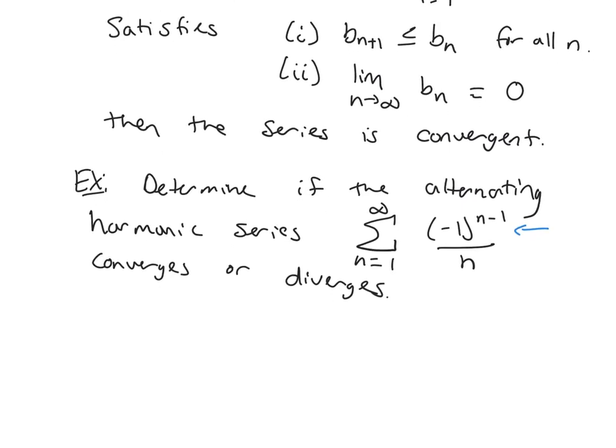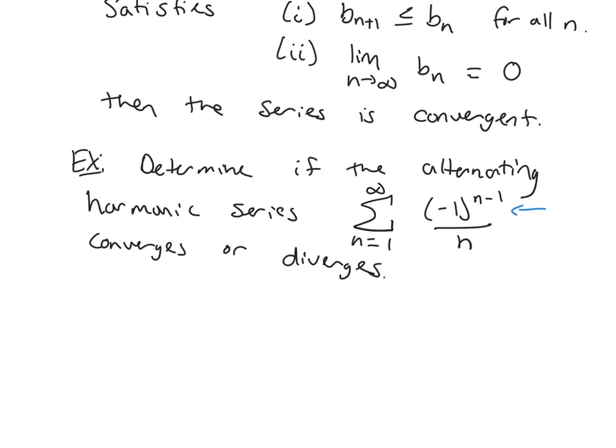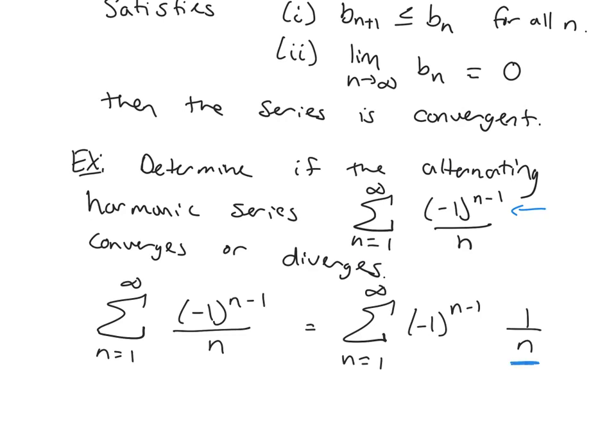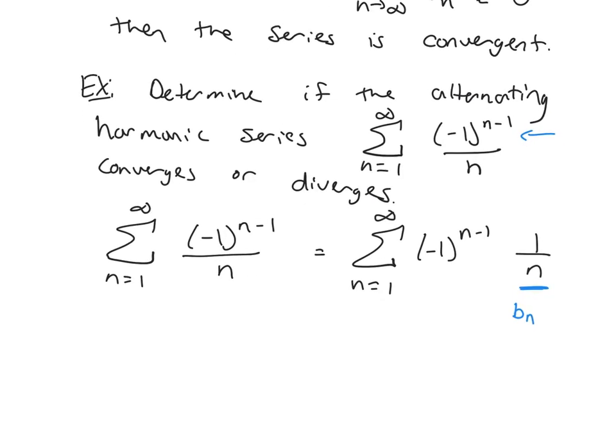So now we need to separate out the negative 1 to the power and everything else that's left in my series. So let's take our series here, and I want to separate out the part that's alternating, the negative 1 to the n minus 1, and then what I'm left with is 1 over n. So this 1 over n, this is my B sub n. B sub n is 1 over n. So I'm ready to check my two conditions of the alternating series test.